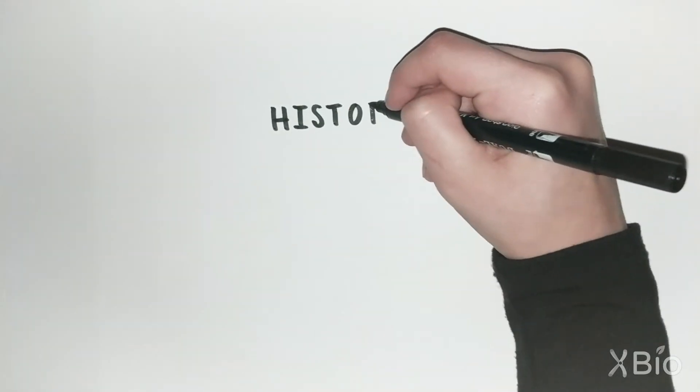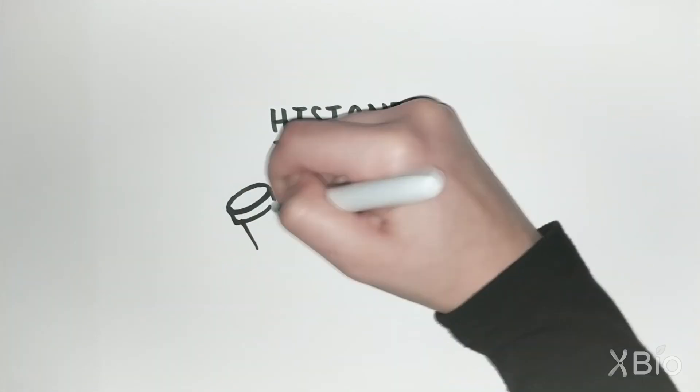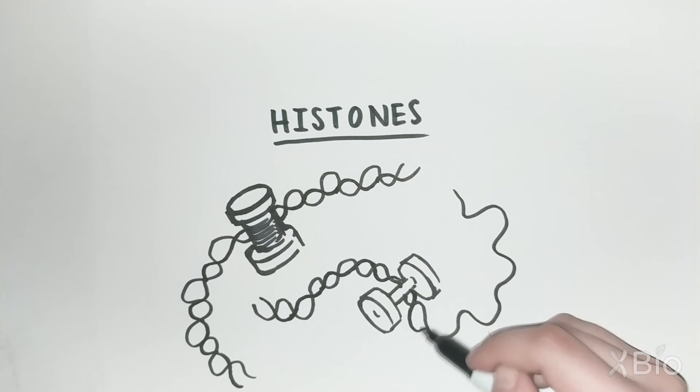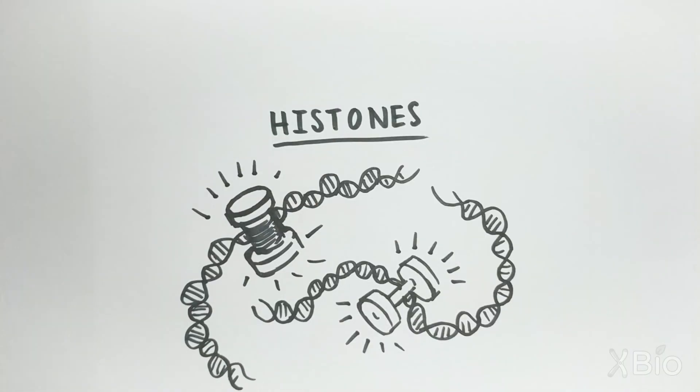In chromosomes, special proteins called histones act like spools to wrap and help neatly package DNA. Want to learn more about how chromosomes are inherited? See our videos on mitosis and meiosis.